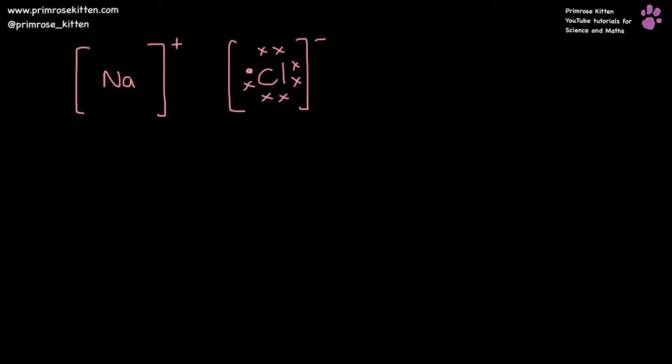When we draw ionic bonding, it's always in a one-to-one, or a one-to-two, or a one-to-three ratio, with something transferring electrons to the other thing.